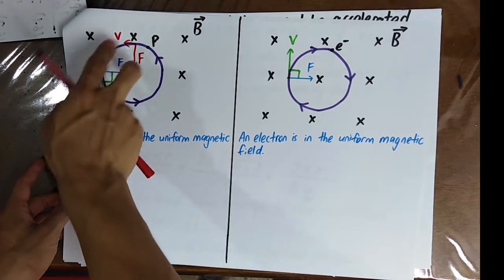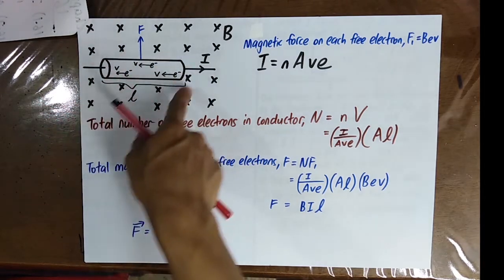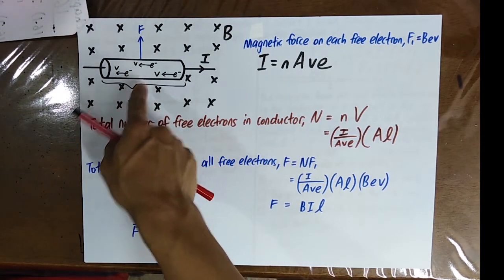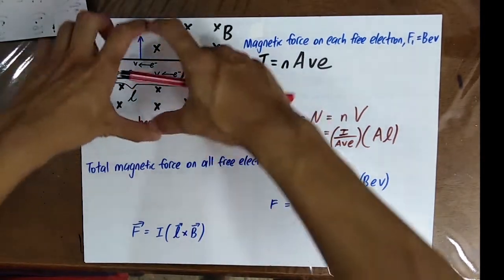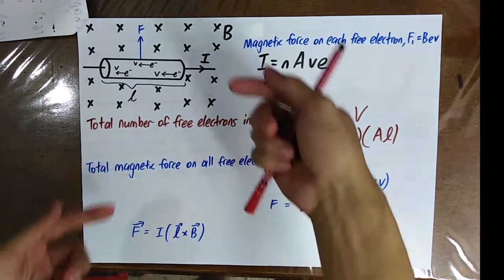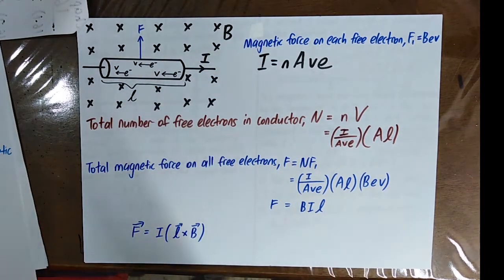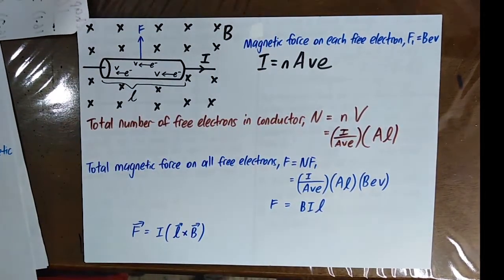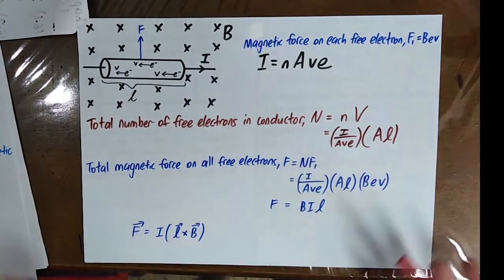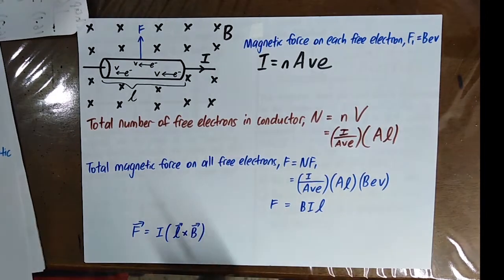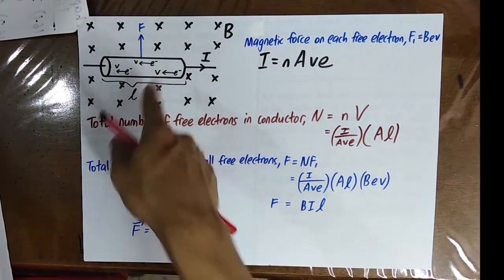The radius of the circular path is normally much bigger than the dimensions of the conductor, so the magnetic force can only push electrons to the edges of the conductor. Only if the conductor were extremely large could electrons trace a circular path inside. Normally this isn't possible because inside a conductor, electrons frequently collide with lattice atoms and other electrons. Charged particles can only move in a circular path inside a vacuum, not inside a conductor where collisions are frequent.